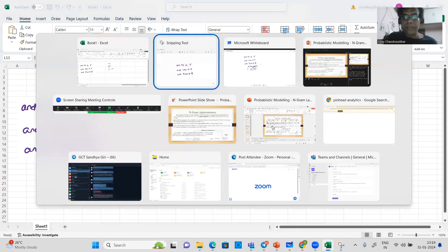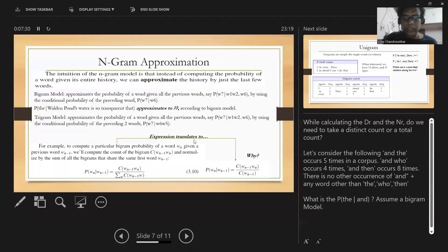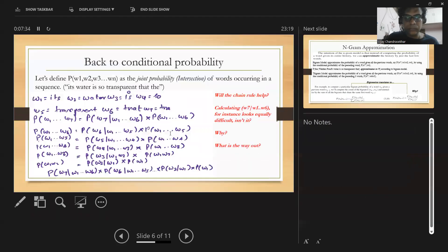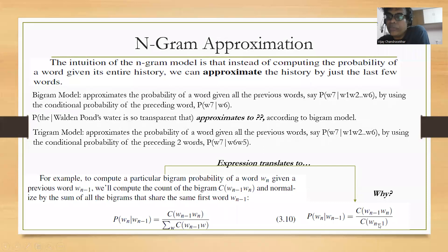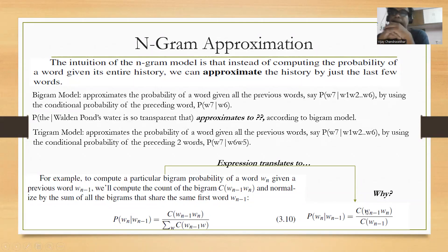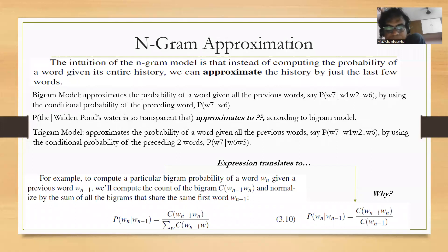Now, in symbolic form: P(wn | wn-1) = C(wn-1, wn) / C(wn-1) — the count of the bigram 'wn-1 wn' divided by the count of the preceding word 'wn-1.' I just demonstrated that through an example, and this symbolic expression captures the same idea.